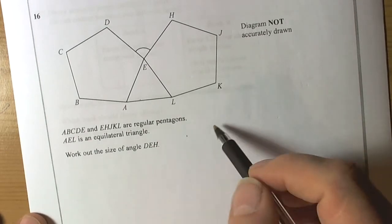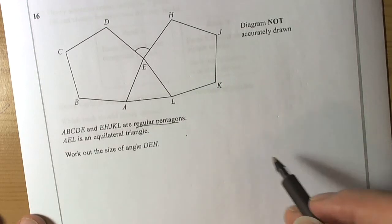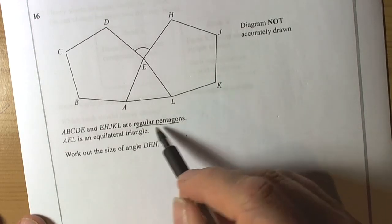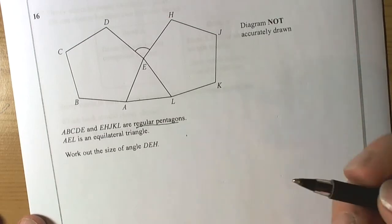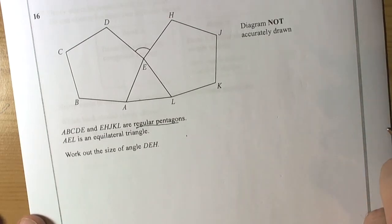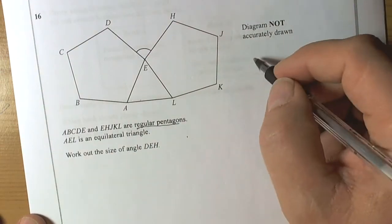This question involves polygons. They're telling us that because they're saying the word regular pentagon. When we see the words pentagons, hexagons, we're dealing with polygons, and we should automatically be thinking about what rules we know about polygons. Before we read the rest of the question, we should be writing those rules down because we know we're going to use them somewhere to help us.